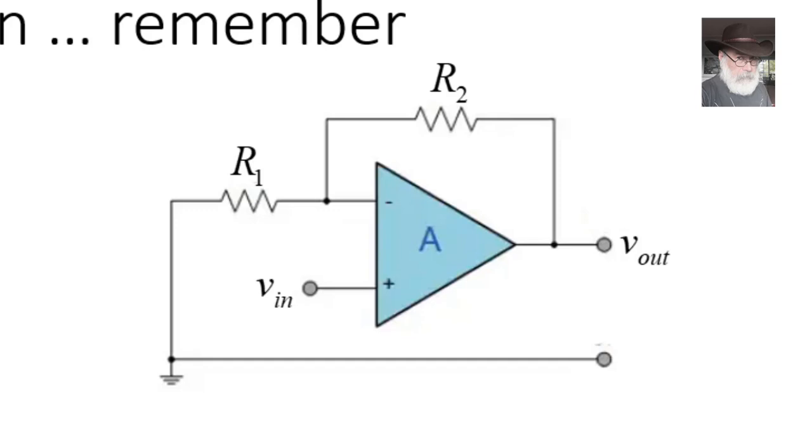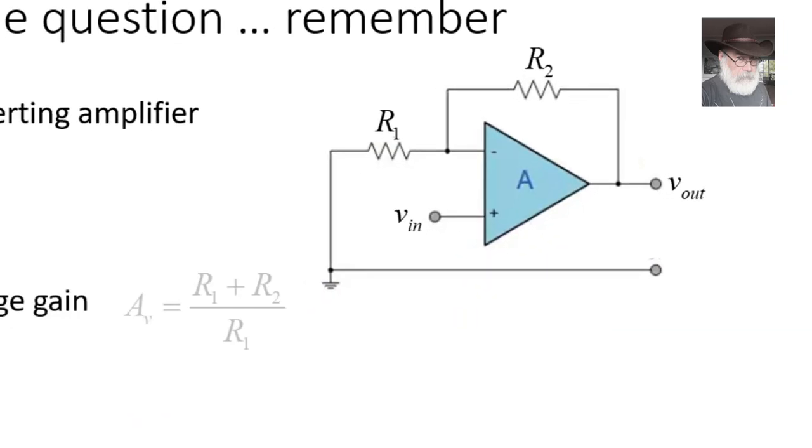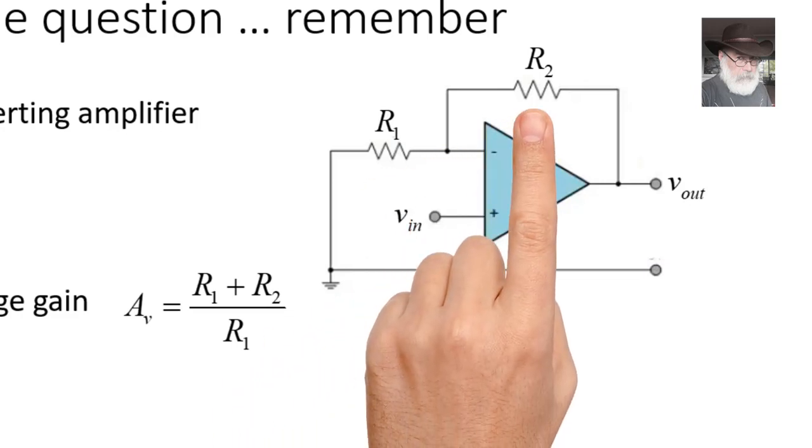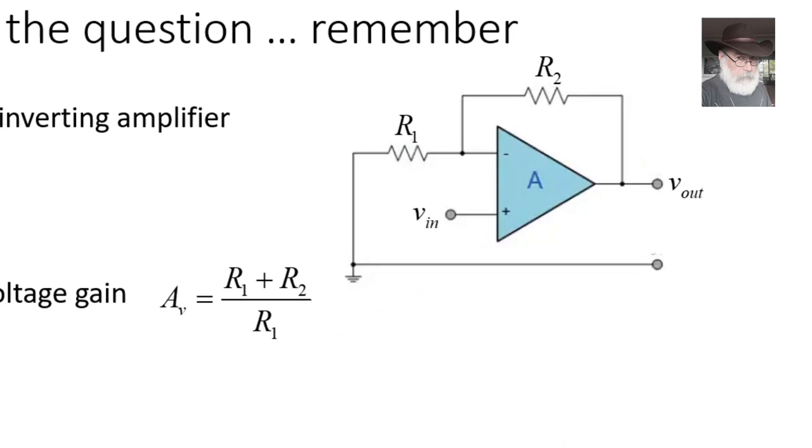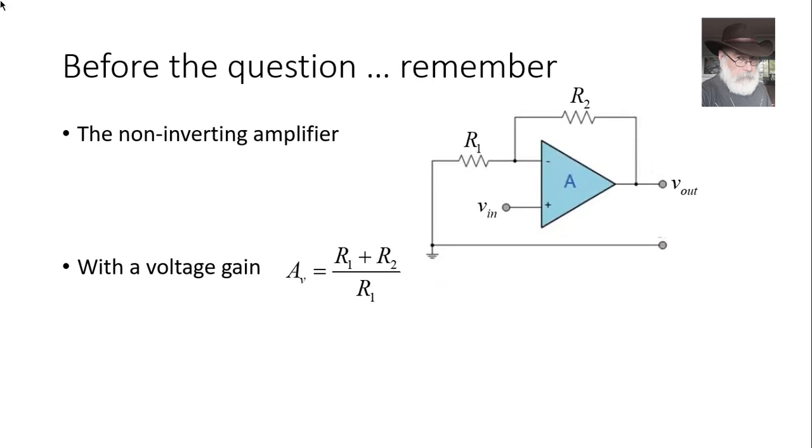Its voltage gain tells us how much bigger the output voltage is than the input voltage. For this configuration, we have seen that the gain is ruled by the values of the two external resistors, R1 and R2. If we multiply the input voltage V in by the voltage gain, we get the output voltage. That easy.